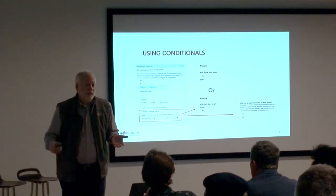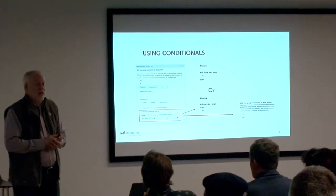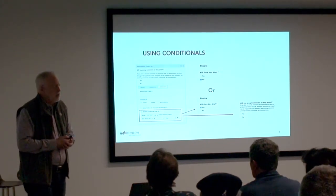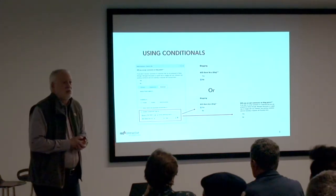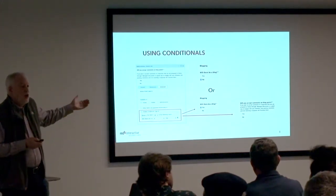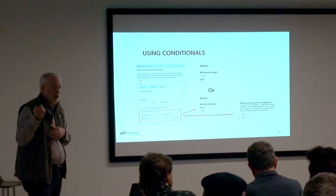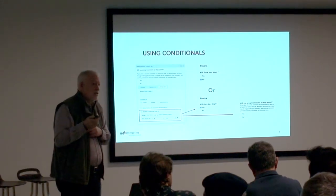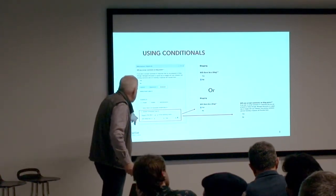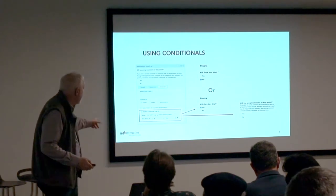Another place that conditionals can be very helpful is contact us forms. Wouldn't it be awesome to have that contact us form also send that name and email address to your email provider? But you want to make sure this doesn't happen if they don't want it to. So you can use a conditional in Gravity Forms to control whether or not that data goes to your email provider. Show if this field matches this — it's very, very handy.